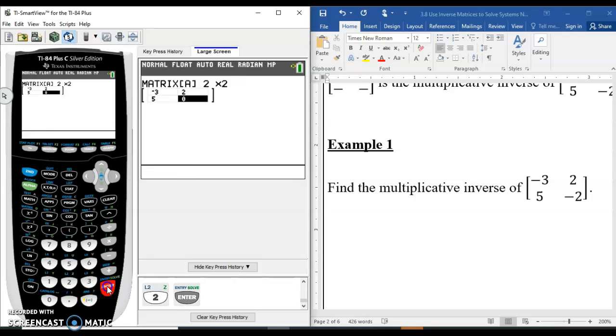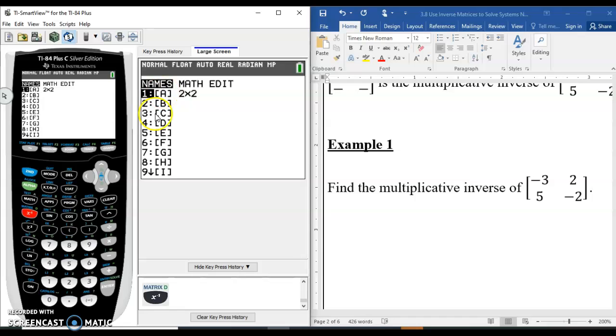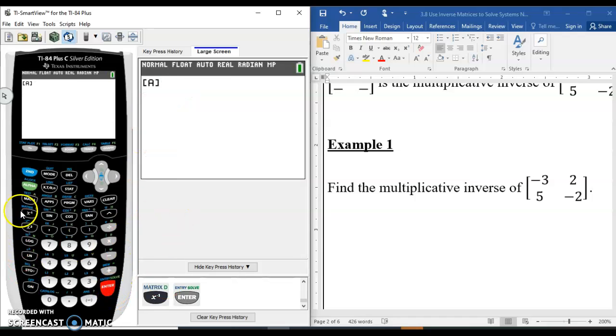So once you enter the matrix, which I have here, I'm just going to go back to the home screen. So now to find the inverse I can recall that matrix. So matrix A is what we just put in, and the inverse button is right here under the math. It looks like x to the power of negative 1.